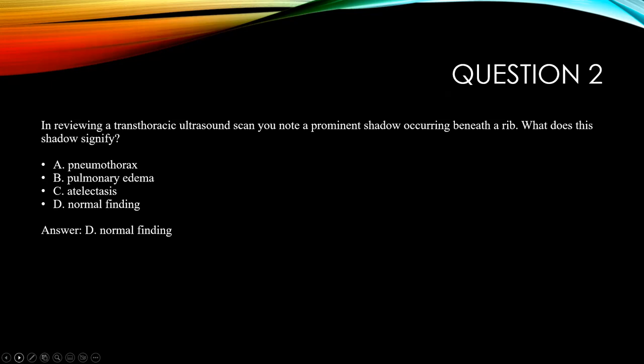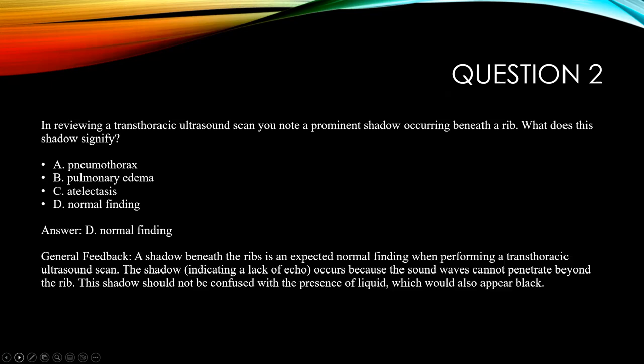The NBRC expects you to know the rudiments of transthoracic ultrasound. The correct answer is D — a normal finding. A shadow beneath the ribs is an expected normal finding because sound waves cannot penetrate beyond the rib. This shadow should not be confused with the presence of liquid, which also appears black but would be much larger — such as a pleural effusion. Ultrasound is commonly used to localize where to insert the needle to drain a pleural effusion.